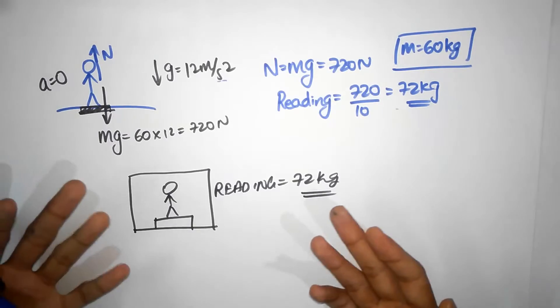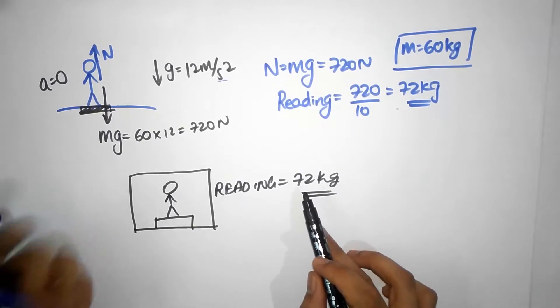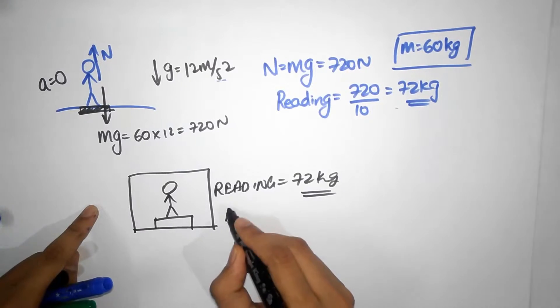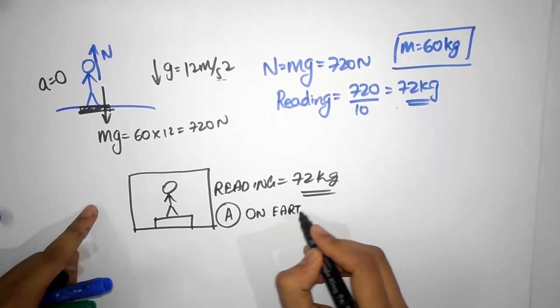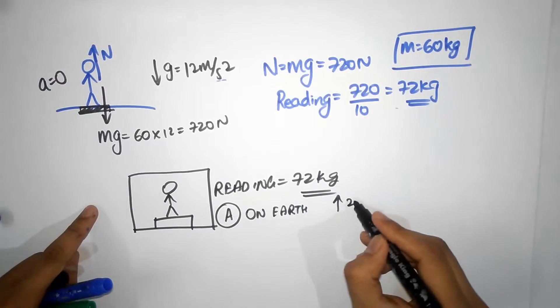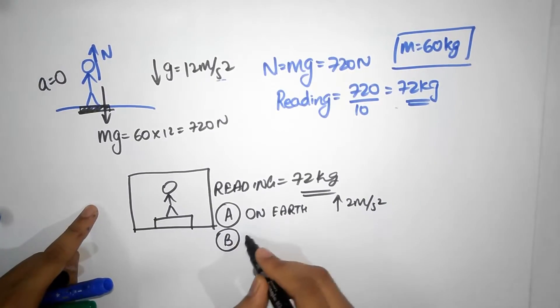And you took this, you saw this video, so you know that it could mean two things now. It could mean, so two meanings: A, you're on Earth accelerating up at 2 meters per second squared.